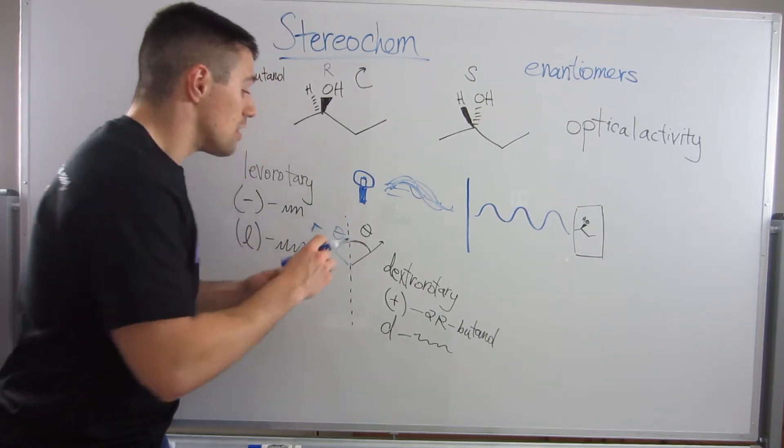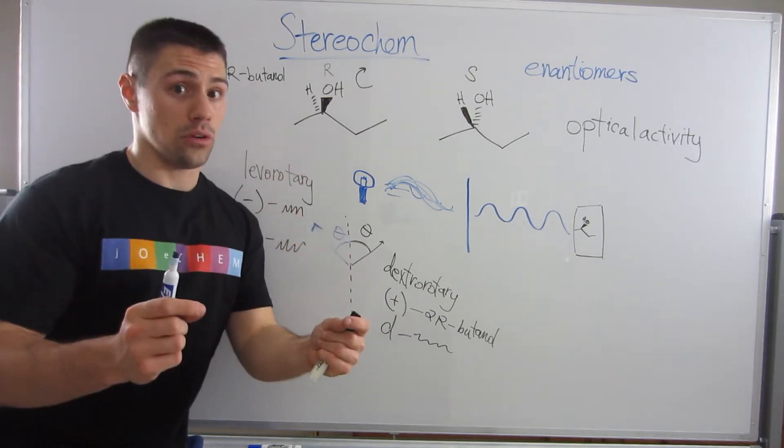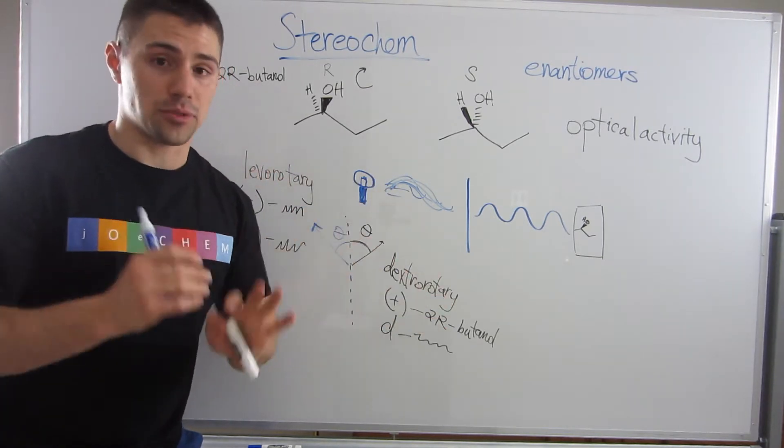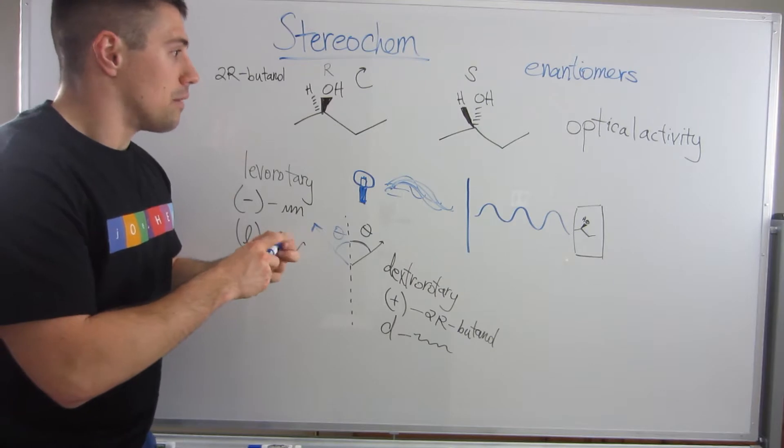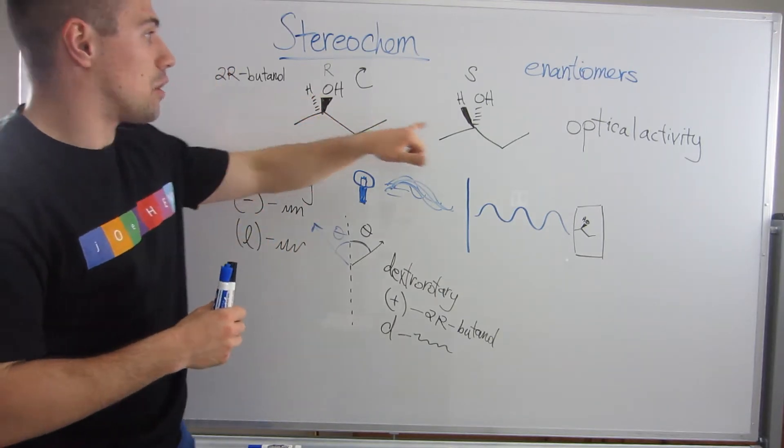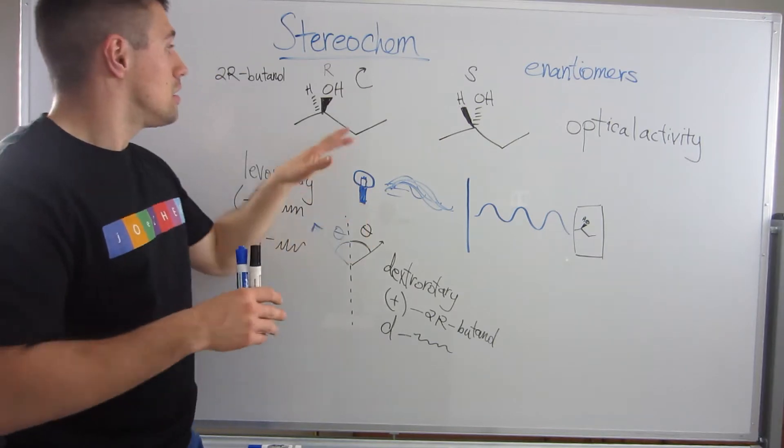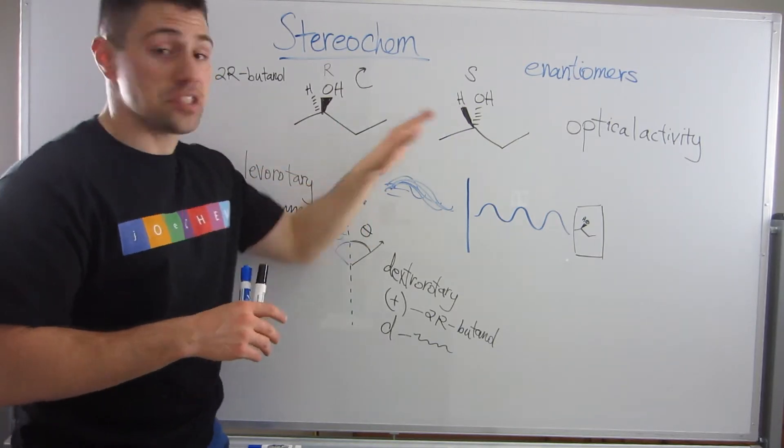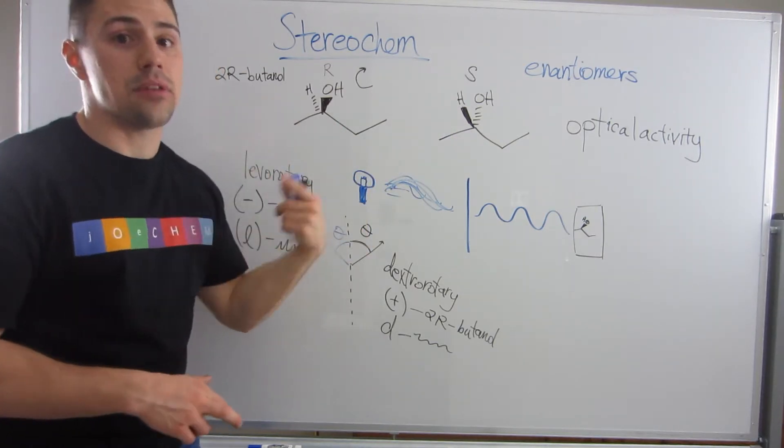Things that have, things that are chiral exhibit optical activity. So by having that handedness, because these are asymmetric molecules with stereocenters, they will exhibit optical activity.